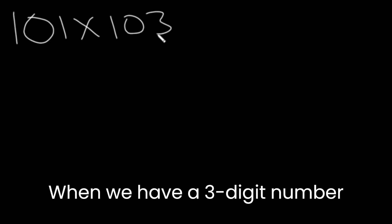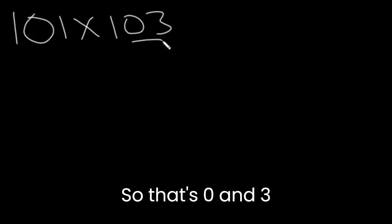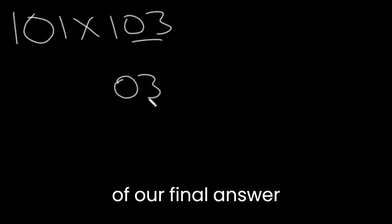Let's say we have 101 times 103. When we have a three-digit number, we're going to take the last two digits, so that's 0 and 3, and then those will be the last two digits of our final answer.